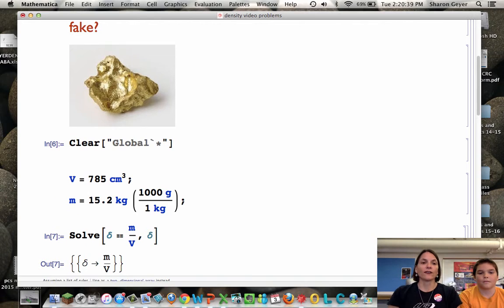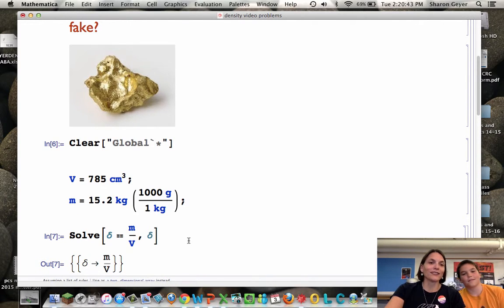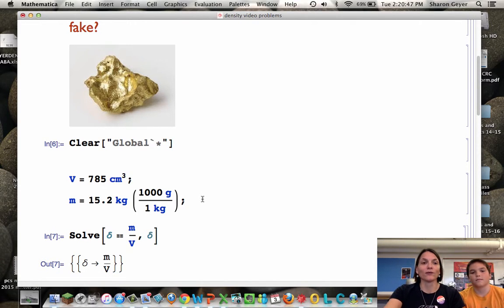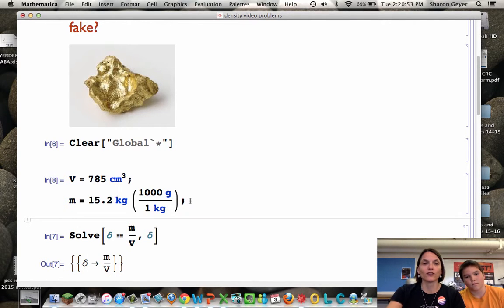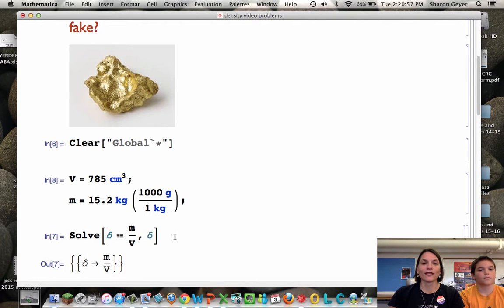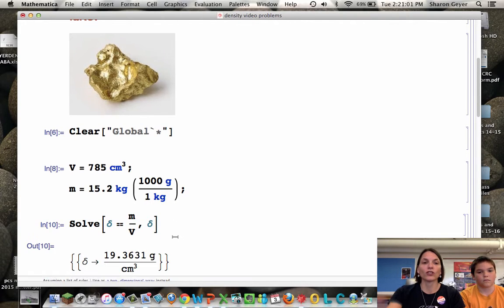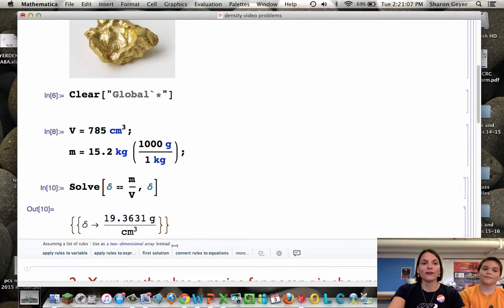Shift-return should give us our answer. You see what happened there, Garrett? I forgot to input my variables. Notice the variables M and V did not turn black. So I've got to go back, click in here, and at the end of that statement, hit shift-return. Now those variables have been entered in, so Mathematica has recorded their values. Now I'm going to shift-return again for my solve function, and there it is. There's the density of our object.